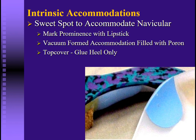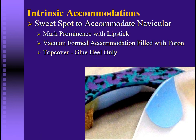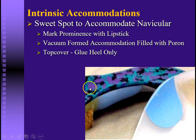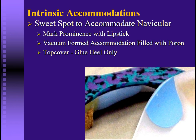Another common issue with this foot is a very prominent navicular. In that case, you'll want to put an accommodation — a pocket called a sweet spot — within the orthosis, often filled with soft materials such as poron. To locate it: when taking a plaster cast, put a little lipstick on the prominent navicular and that will transfer to show the lab where to put the accommodation. If taking a three-dimensional laser scan, put a small piece of felt on the navicular so it shows up on the image. Because you may still need to adjust this area, recommend that your top cover be glued heel only, leaving it unglued on the anterior portion so you can still access the area.